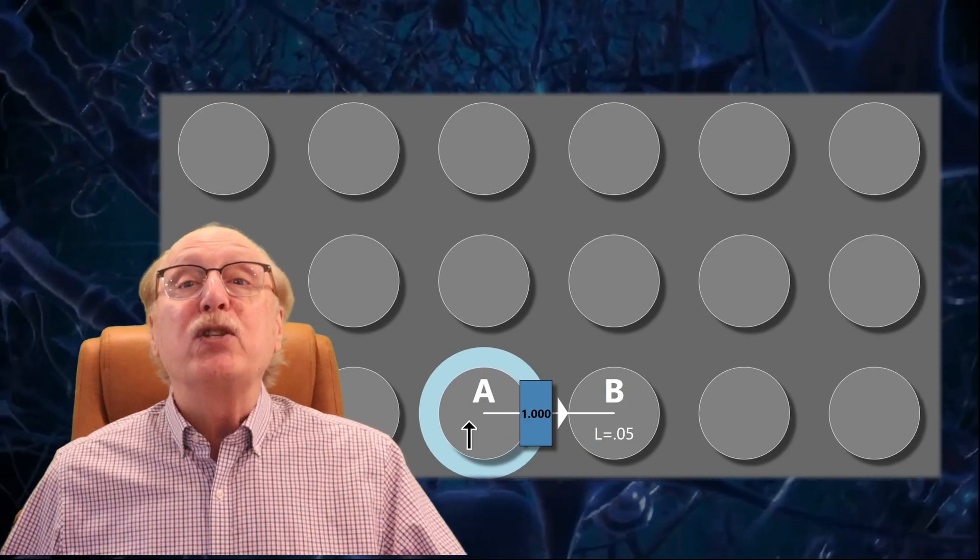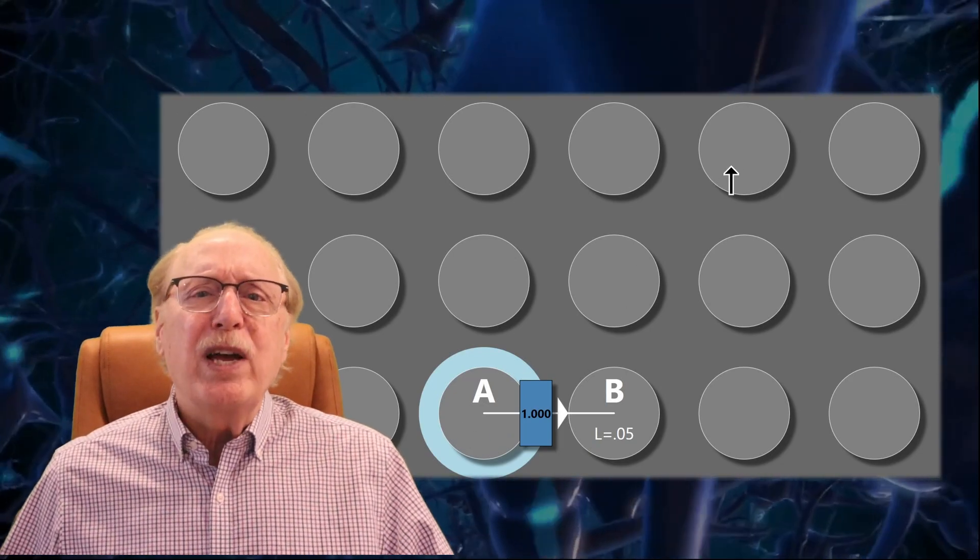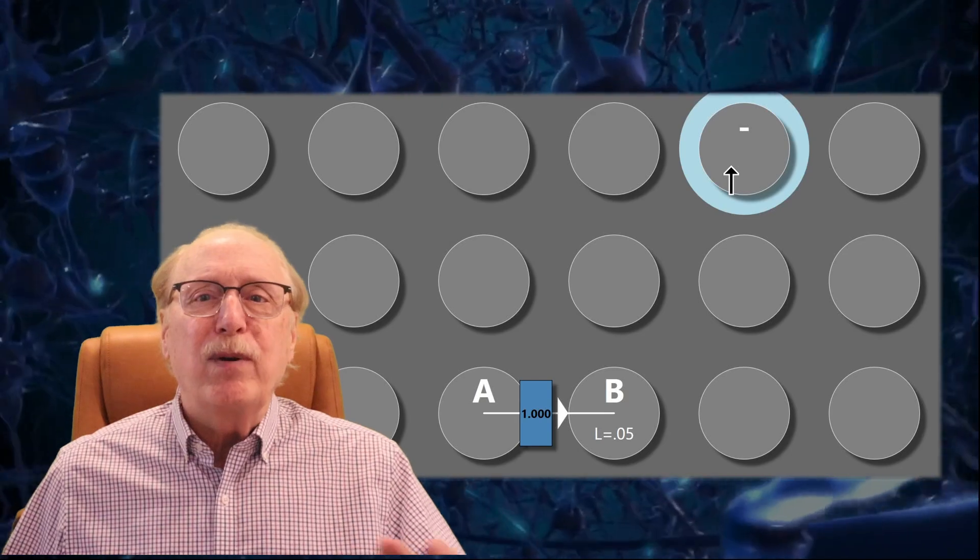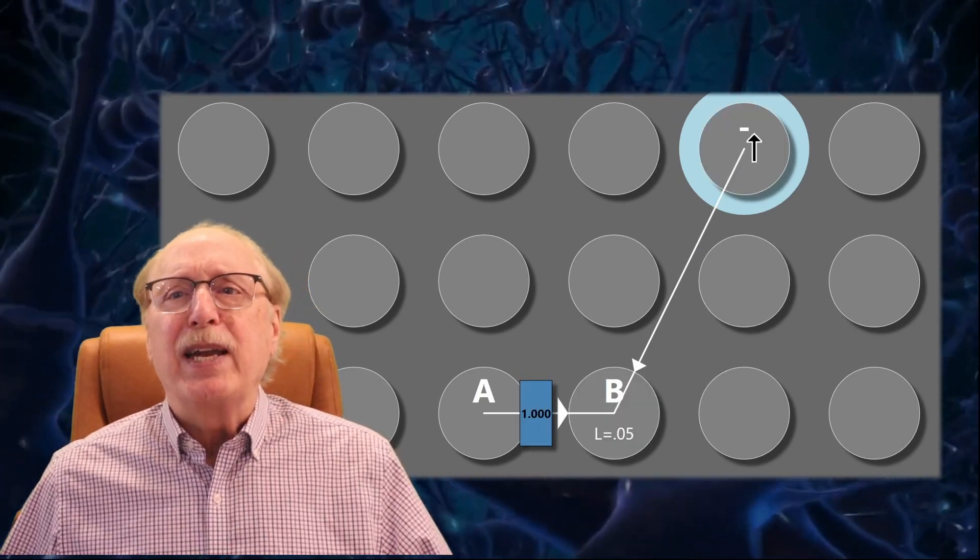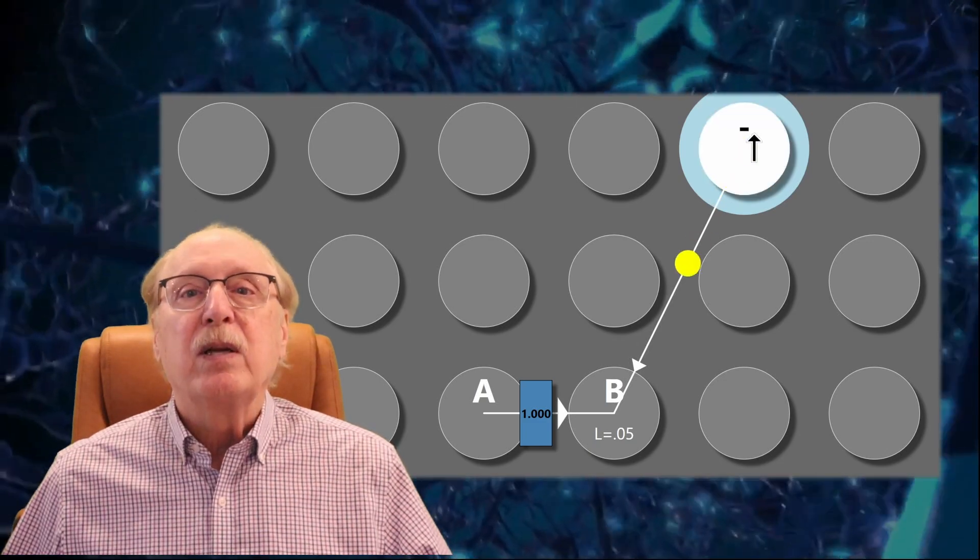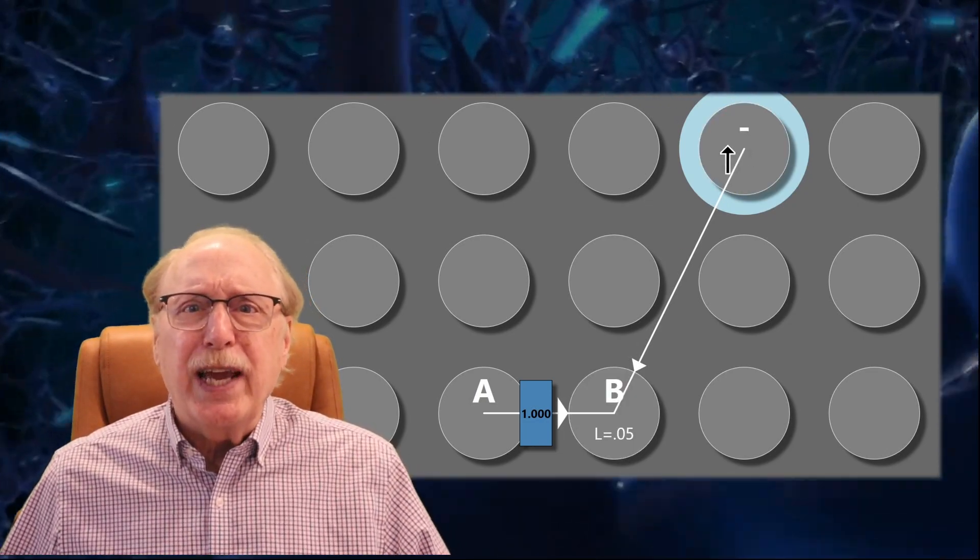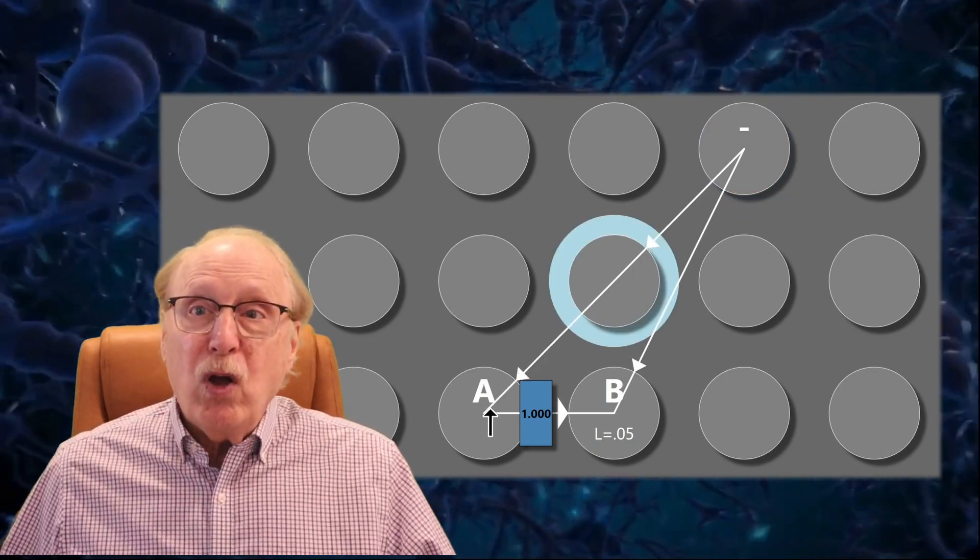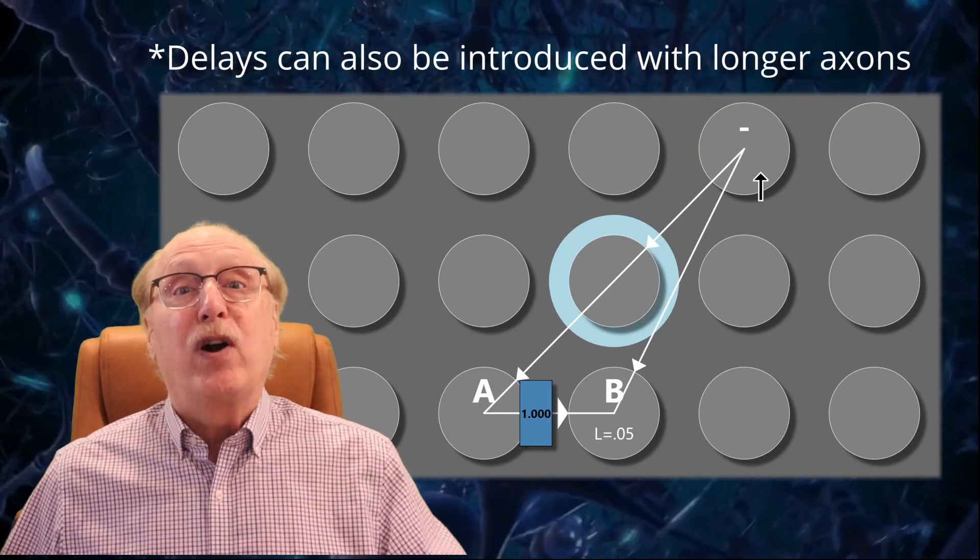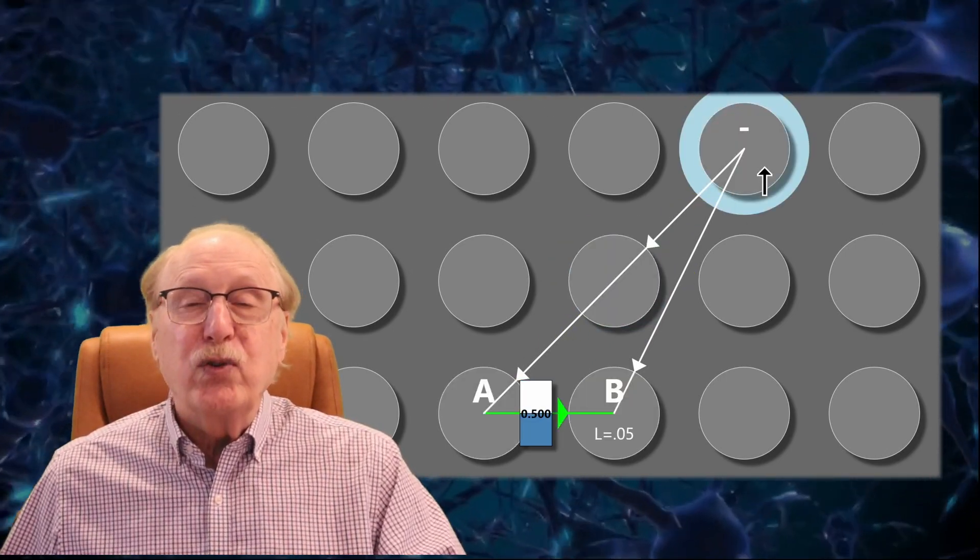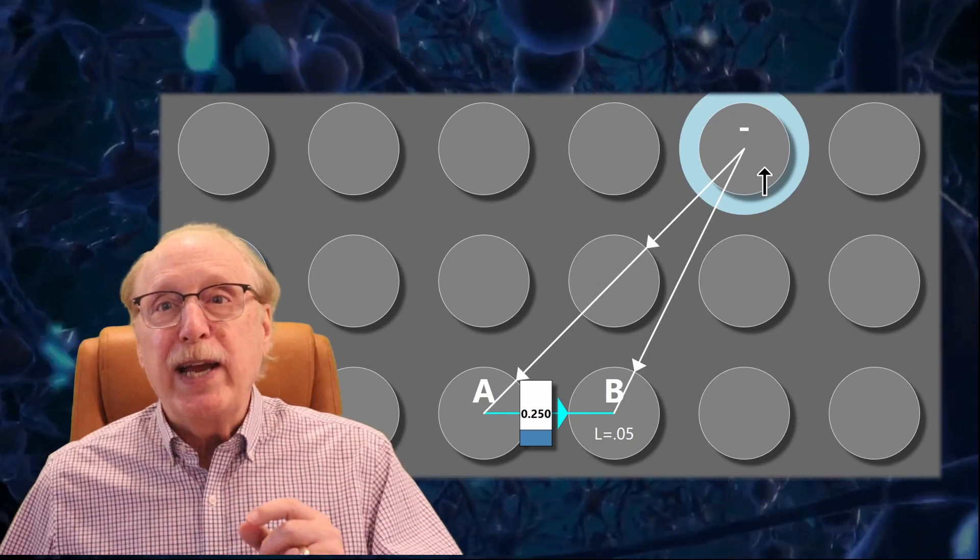To lower that synapse weight, we must contrive to fire neuron B shortly before neuron A. We can do that with a few added neurons, and we'll label this one with a minus sign. We'll connect it with a synapse to neuron B. By the way, all the white synapses I'm adding have a fixed weight of 1. Now if I fire the minus neuron, it causes neuron B to fire, but nothing interesting happens. But if I also connect the minus neuron to another neuron to introduce a 1ms delay and then connect that neuron to neuron A, now every time I fire the minus neuron, the weight of the Hebbian synapse is reduced because neuron A will fire shortly after neuron B.